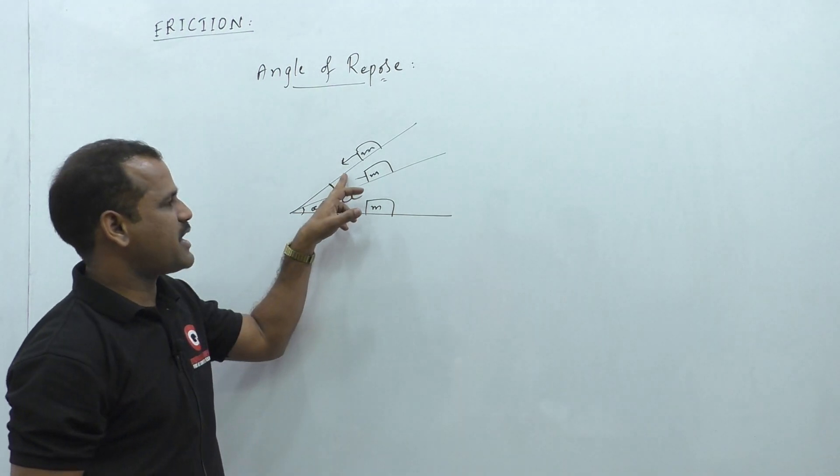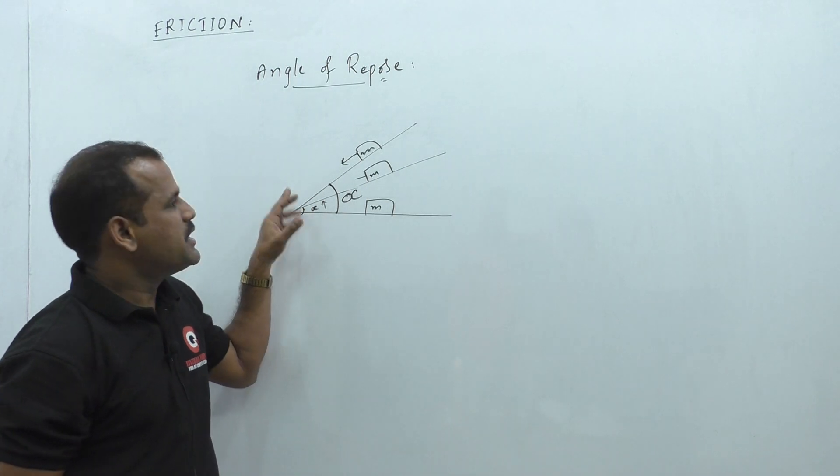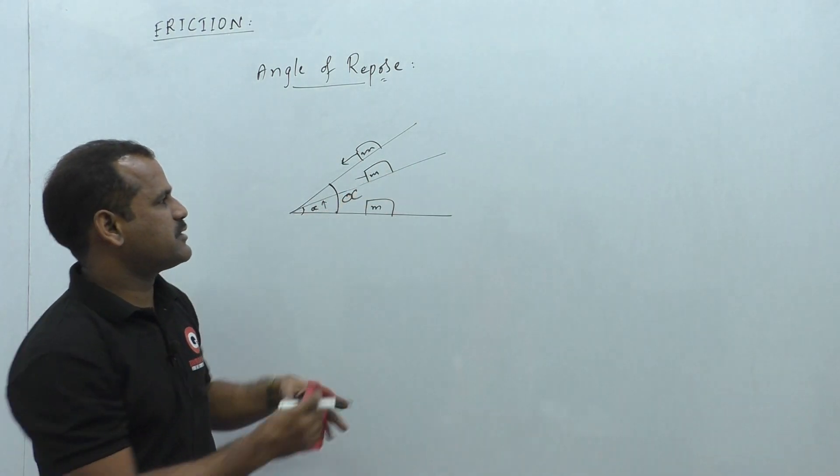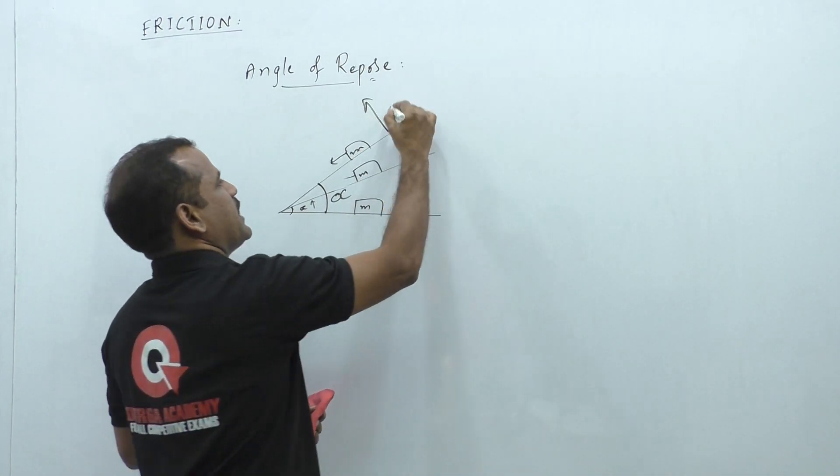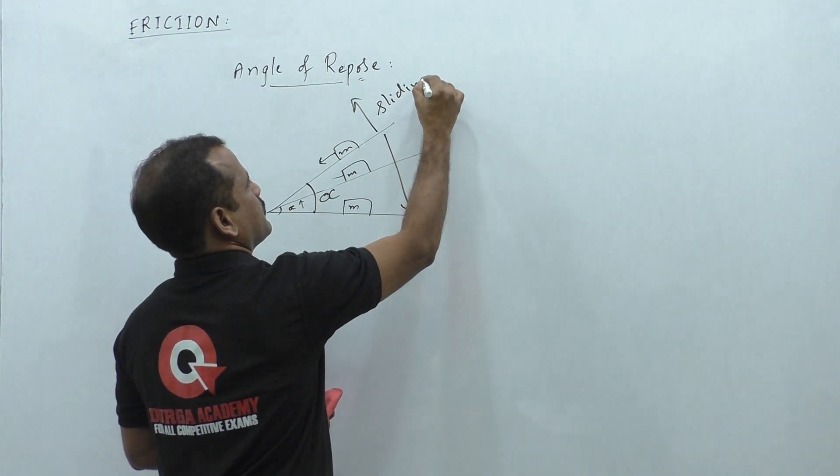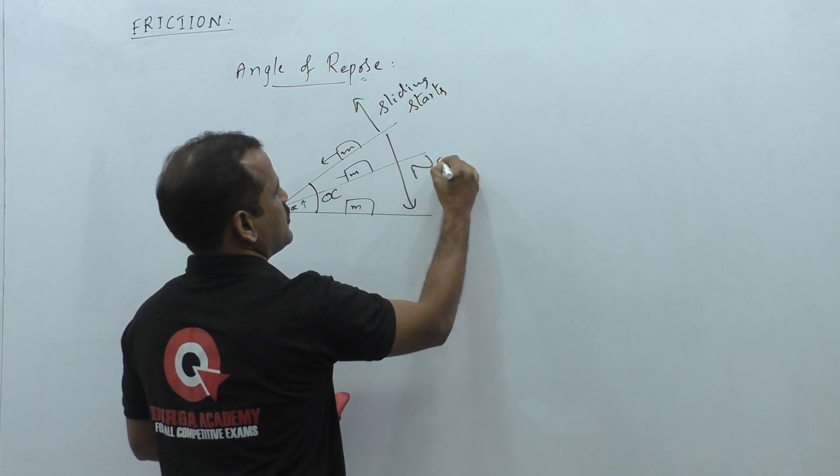So, after this angle only, the object starts sliding down on the plane. Before this, there is no sliding of the object for all these angles. After this, the sliding starts. Here, no sliding.